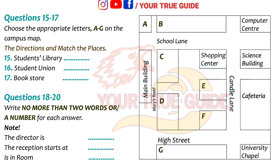The other one is the post office. Then we will follow Mary's Road until we come to School Lane. Here on the opposite side of the road you will see a huge white building directly on your left-hand corner — that would be the students' library. The student union is next to it, opposite the bank. Then we turn right and get into Candle Lane. There is a big shopping center directly on the corner, and the science building is on the left-hand side as we go down Candle Lane.